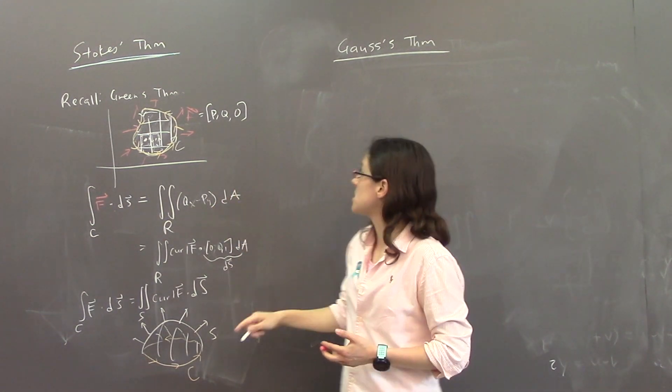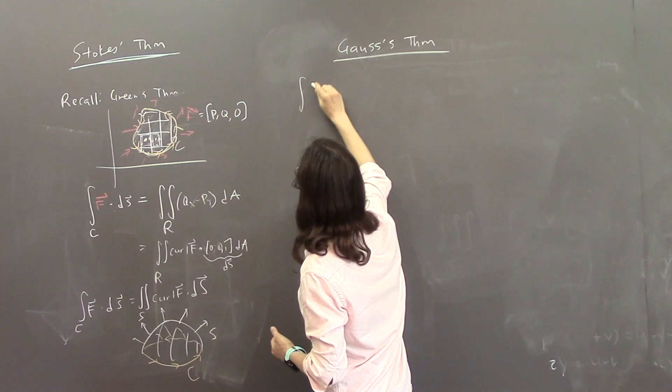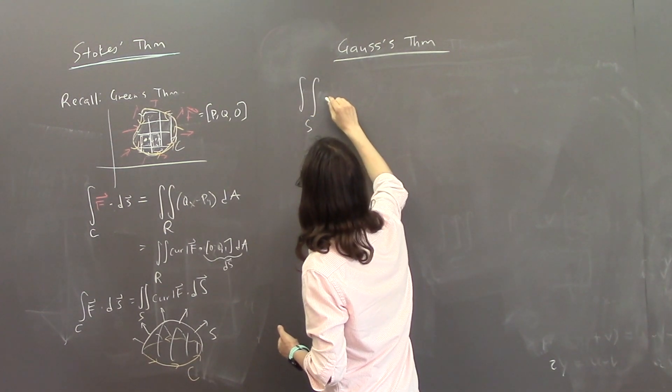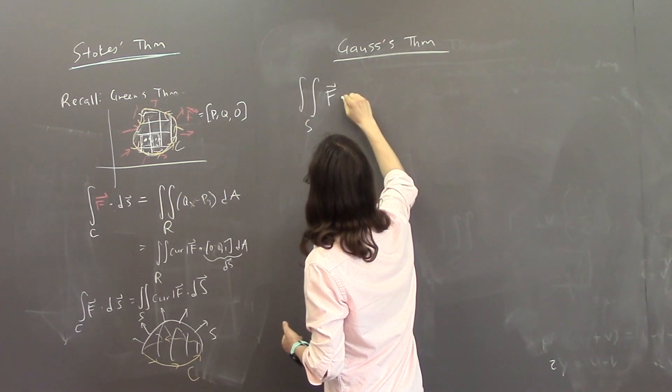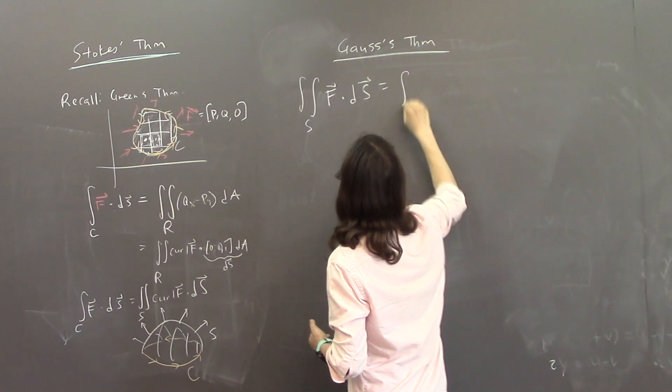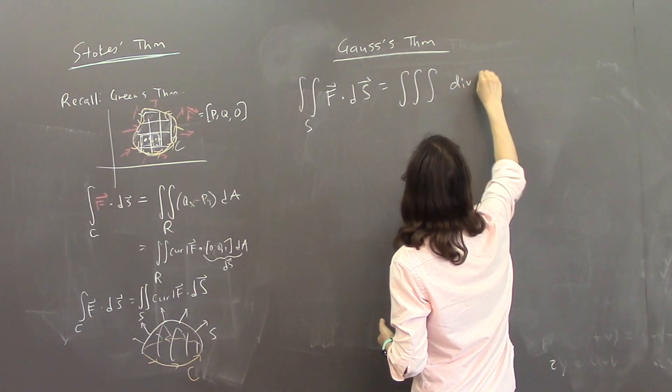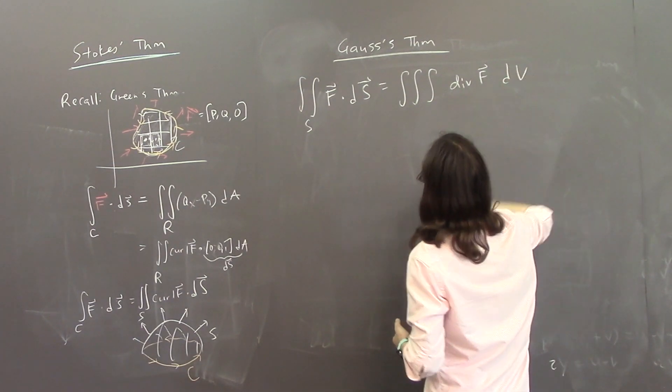So it relates the double integral over a surface of F dot dS to the triple integral of divergence of F dV.